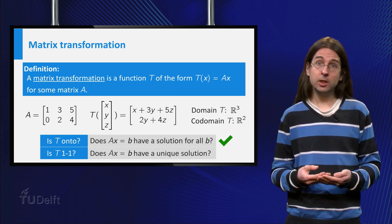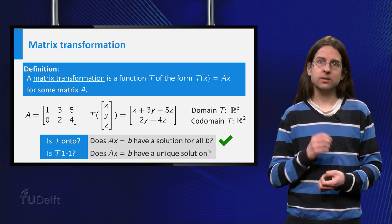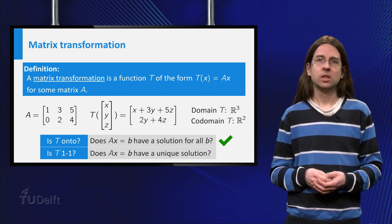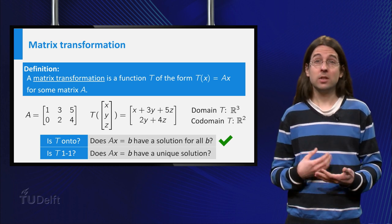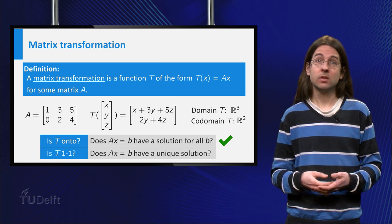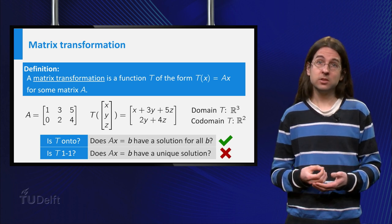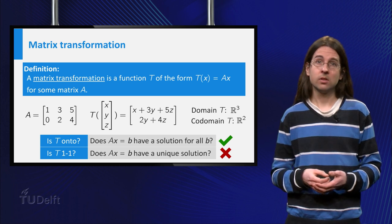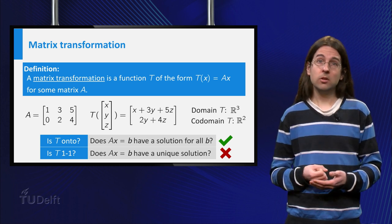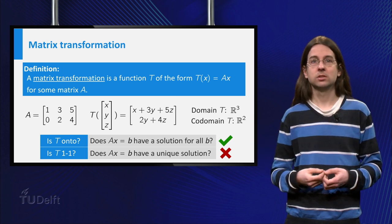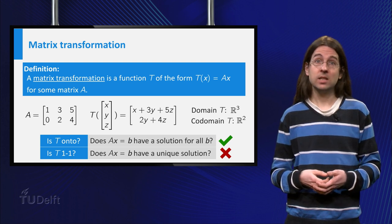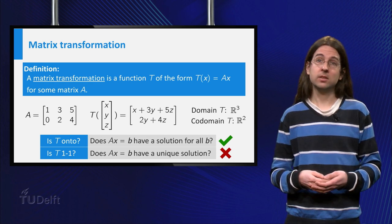We also see that there is a free variable. The third column does not contain a pivot. Thus there is not just one solution, there are infinitely many solutions to the equation Ax = b. This means that the function T is not injective. Now you know that linear systems either have 0, 1 or infinitely many solutions. Since our matrix transformation T is not injective, it has infinitely many solutions to the equation T(x) = b for any b in the range of T.